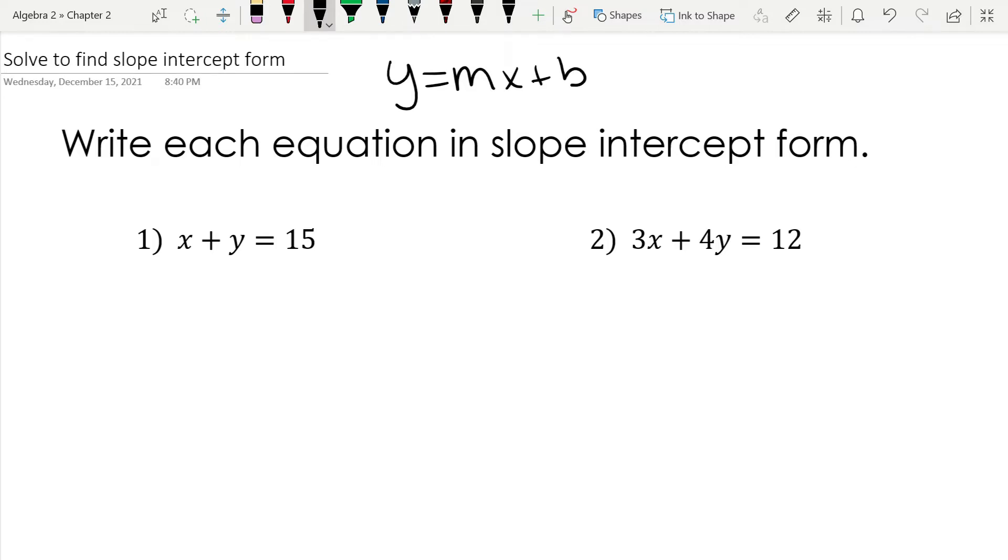And we do that when we want to graph a line, because m is our slope and b is our y-intercept.